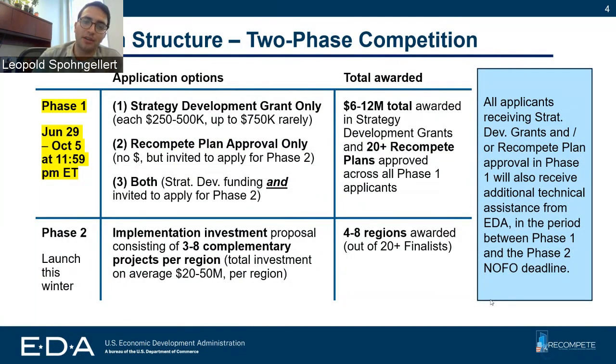As a reminder, you don't have to choose between the two. You can apply for a planning grant, you can apply for a recompete plan approval, or you can apply for both.